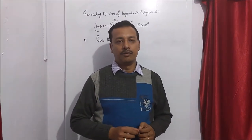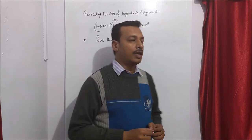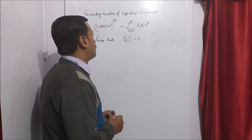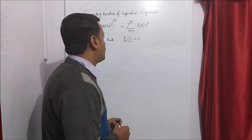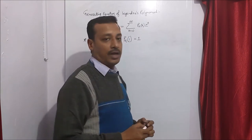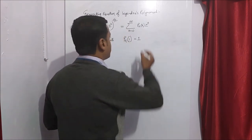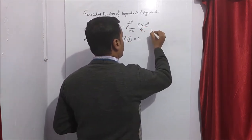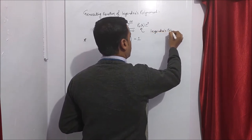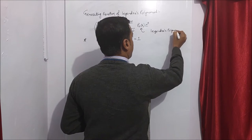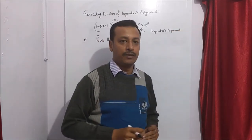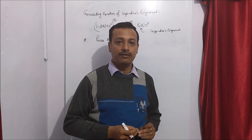Generating function of Legendre Polynomial. We have seen that 1 minus 2xz plus z squared to the power minus half is equal to summation n equals 0 to infinity Pn(x) z to the power n, where Pn(x) is the Legendre Polynomial. Using this we can easily prove that Pn(1) is equal to 1.